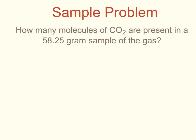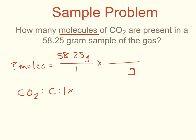In the second sample problem, I'm asked how many molecules of carbon dioxide are present in a 58.25 gram sample of the gas. I'm looking for molecules, so that's what I start with. Question mark molecules equals my given, which is 58.25 grams over 1. I want grams to cancel, so it has to go on the bottom of my next fraction. To use grams, I have to find the molar mass of CO2. In carbon dioxide, there's one atom of carbon times the atomic mass of carbon, which is 12. And there are two atoms of oxygen. So 2 times the atomic mass of oxygen, which is 16, gives me 32. When I add these numbers together, I get a mass of 44 grams.